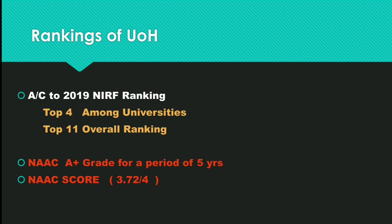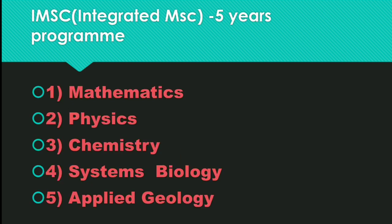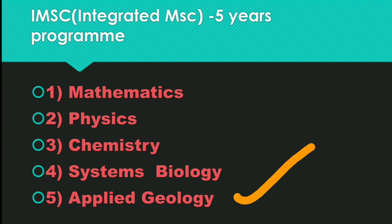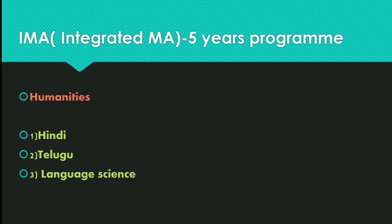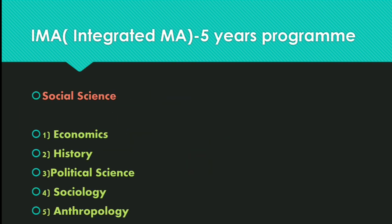The NAAC score in 2019 was 3.7244. Integrated MSc five-year programs offered at University of Hyderabad are Mathematics, Physics, Chemistry, Systems Biology, and Applied Geology. The six-year integrated program is Masters of Optometry — six years and 12 semesters. The Integrated MA five-year program covers humanities streams: Hindi, Telugu, and Language Science.